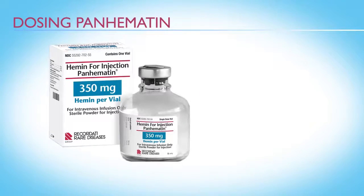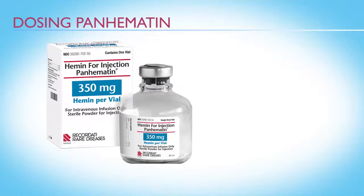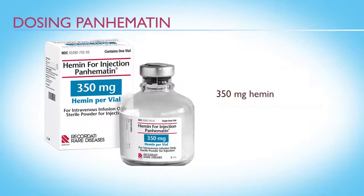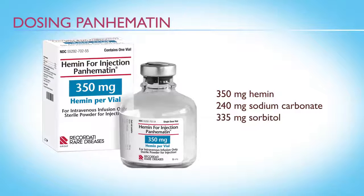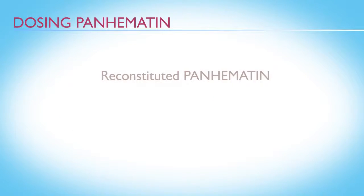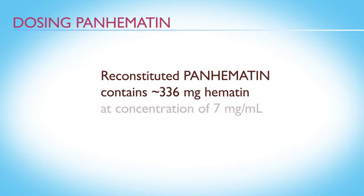Panhematin is supplied as a sterile, lyophilized black powder in single-dose dispensing vials containing 350 mg hemin, 240 mg sodium carbonate, and 335 mg sorbitol. When reconstituted with sterile water for injection, USP, it contains the equivalent of approximately 336 mg of hematin at a concentration of 7 mg per milliliter.